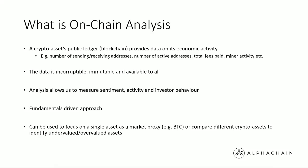Finally, we are able to focus on a single asset as a market proxy. For example, in my model I use it mainly based on BTC, which I use as a market proxy. Generally the market is very correlated at this moment — it may not be in the future, but currently correlations are relatively high. Or we can compare different crypto assets to identify any areas of undervalued or overvalued assets. Some of these data providers give us on-chain metrics for Ethereum and other chains as well, and there are lots of different ways you can use this data.